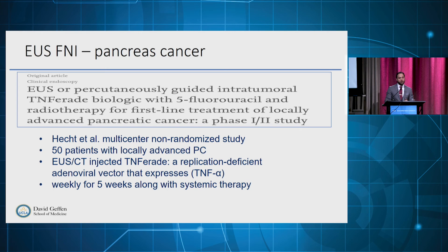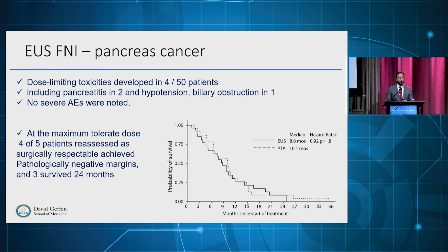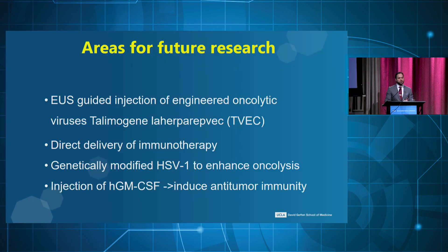Another multicenter study, which UCLA was part of, looked at 50 patients with locally advanced pancreatic cancer using either EUS-guided or CT-guided injection of TNFerade, a replication-deficient adenoviral vector delivering TNF-alpha, given weekly for five weeks. Dose-limiting toxicity developed in four out of five patients, but for those who tolerated the injection, seven patients underwent resection — six with R0 — and four out of five patients who tolerated maximum dose also achieved R0 resection. Future research areas include EUS-guided injection of oncolytic viruses, genetically modified HSV-1, and immunotherapy.